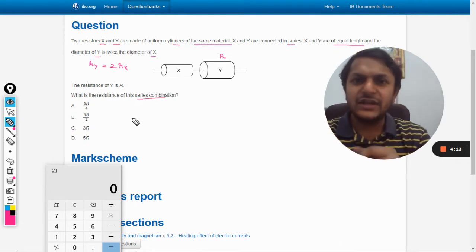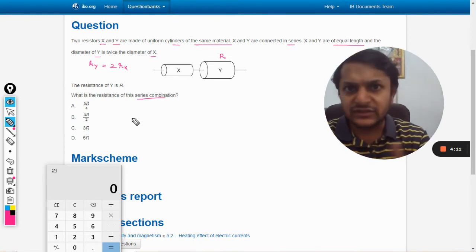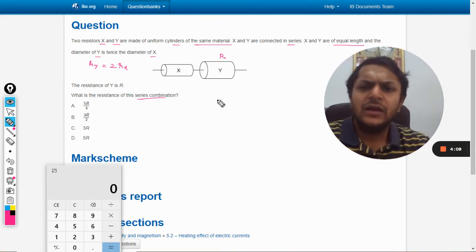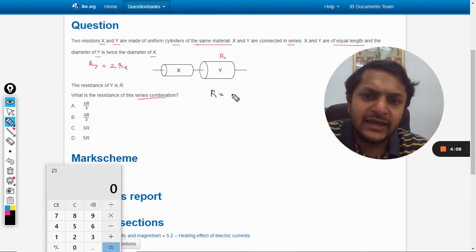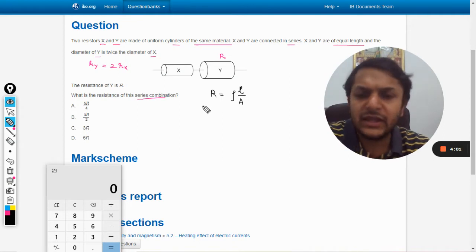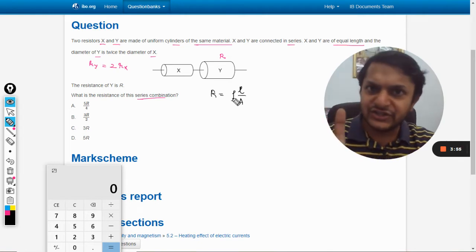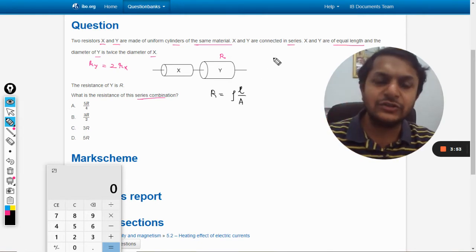Resistance is given by resistivity times length divided by cross-sectional area. Both resistors have the same material, so resistivity will not change. They have the same length also, but the area is going to be different.